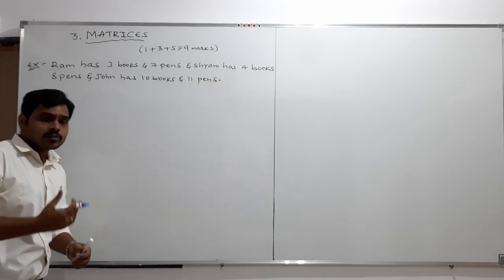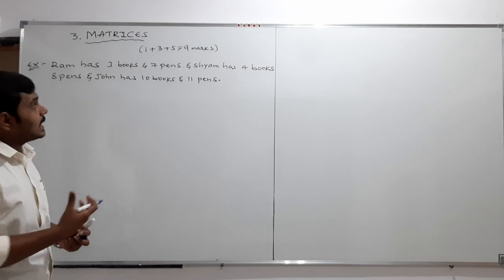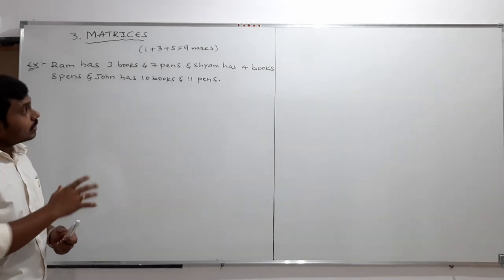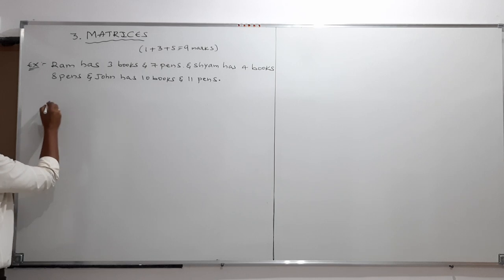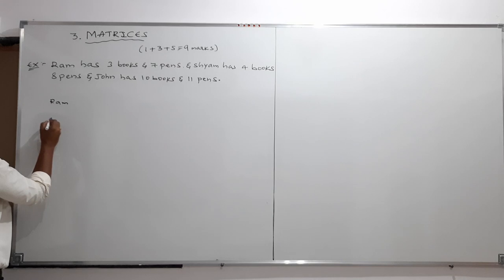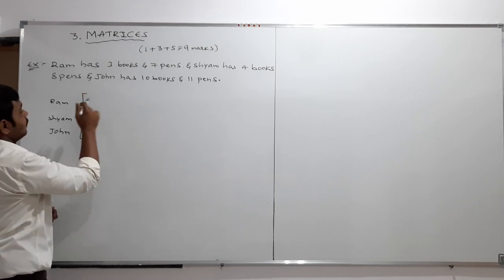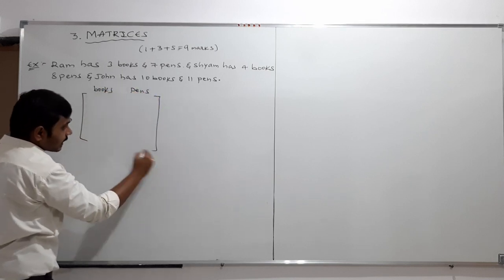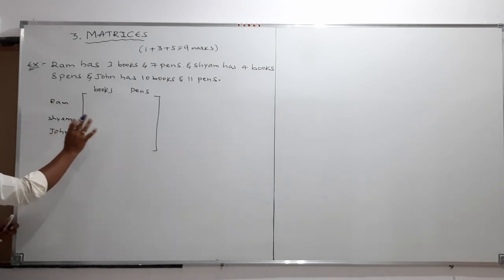This is just some information. I will take 3 students — Ram, Shyam, and John — and they have things like pens and books. Instead of writing all this information in sentences, can I write it in short? I will write the names of the students — Ram, Shyam, and John — and within a bracket, I will write the information about books and pens.